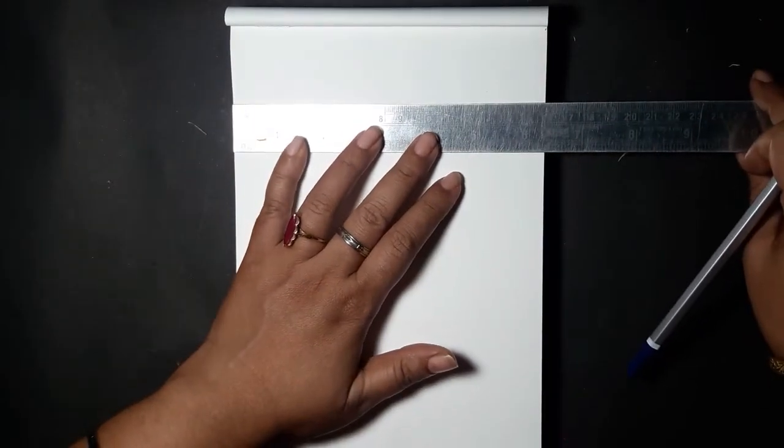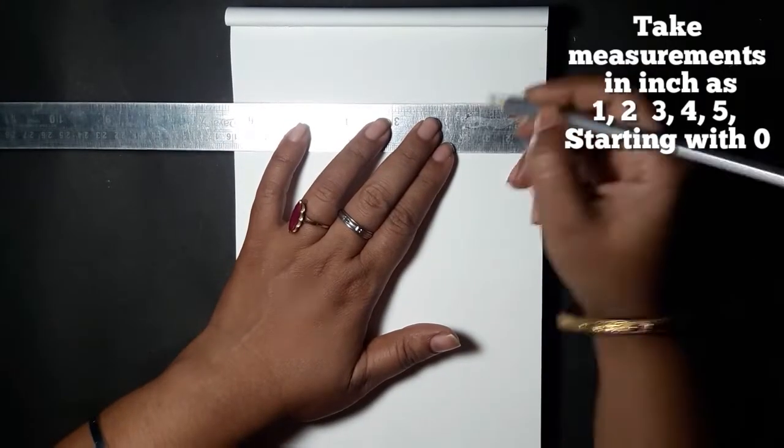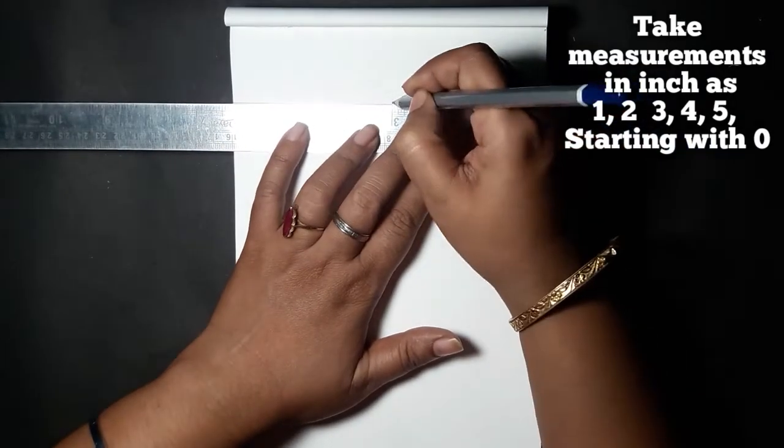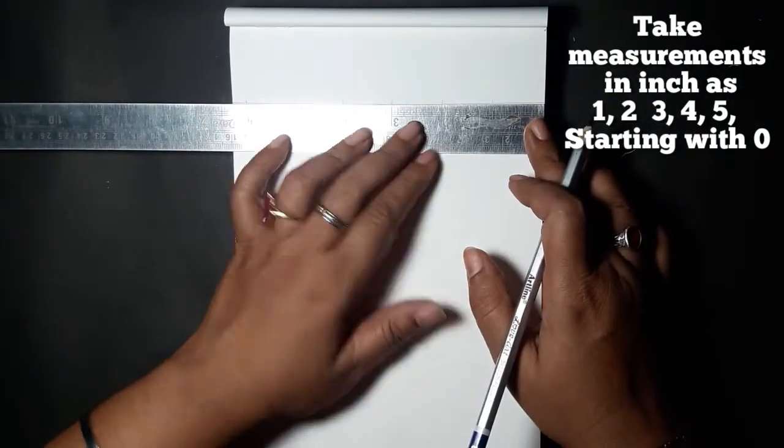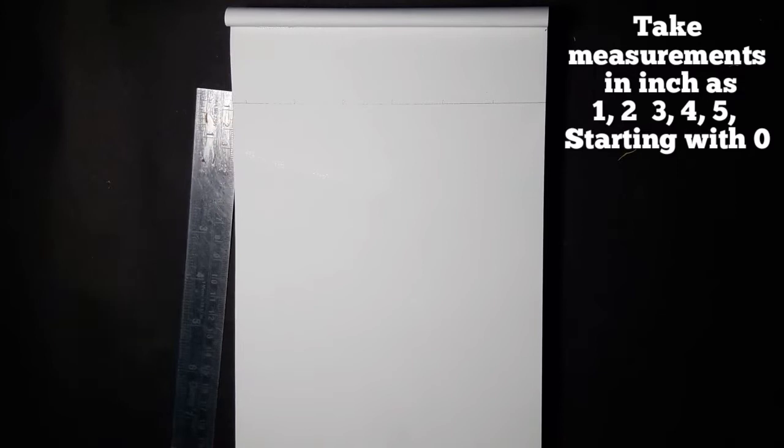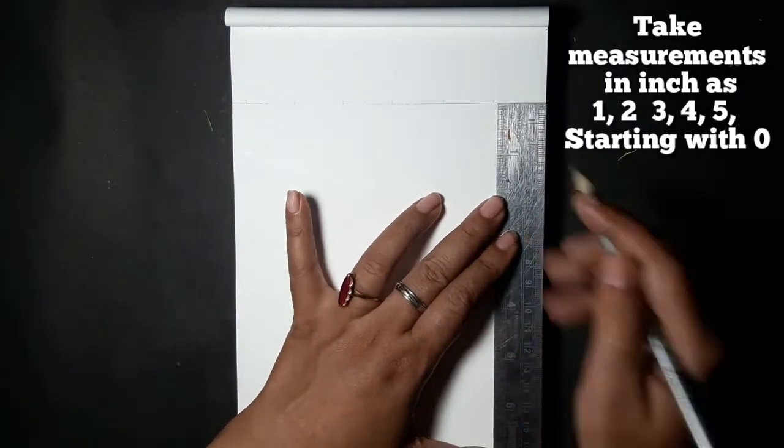Mark one, two, three, four, and five in inches, starting with the zero point - that is the beginning of the scale. Do the same on each direction and connect the lines just like this.